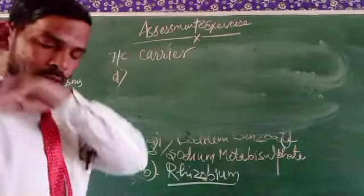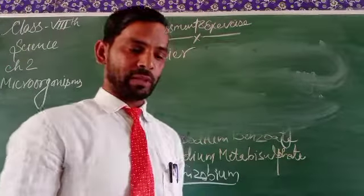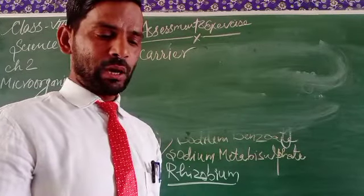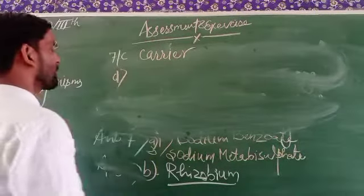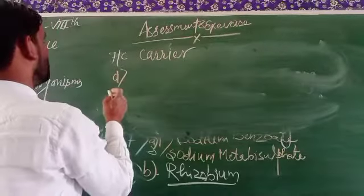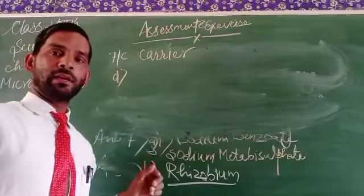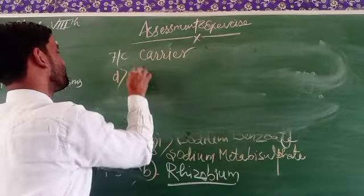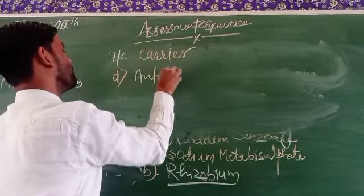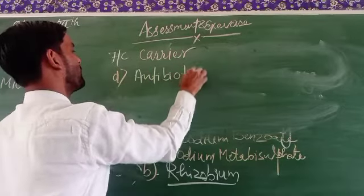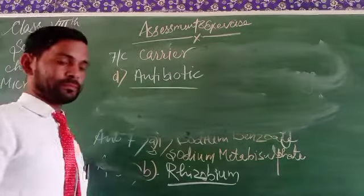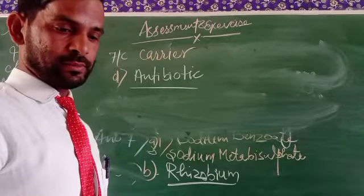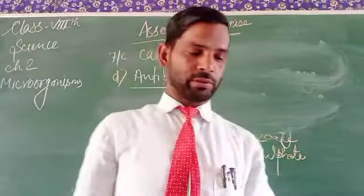Answer number 7D: chemical which kills or stops the growth of pathogens. The chemical that kills or stops the growth of pathogens is an antiseptic.